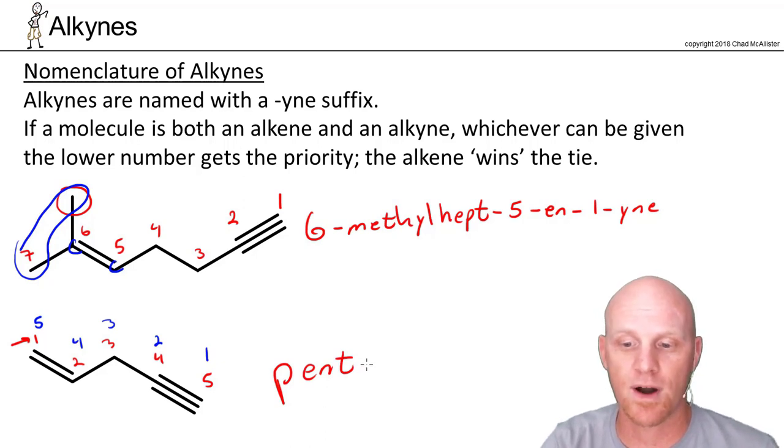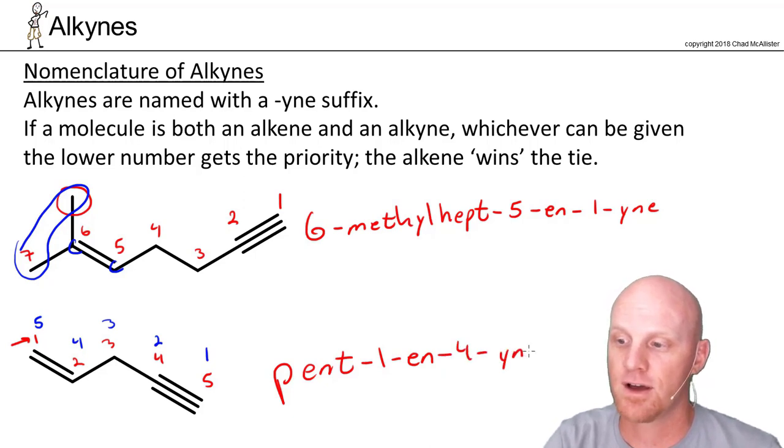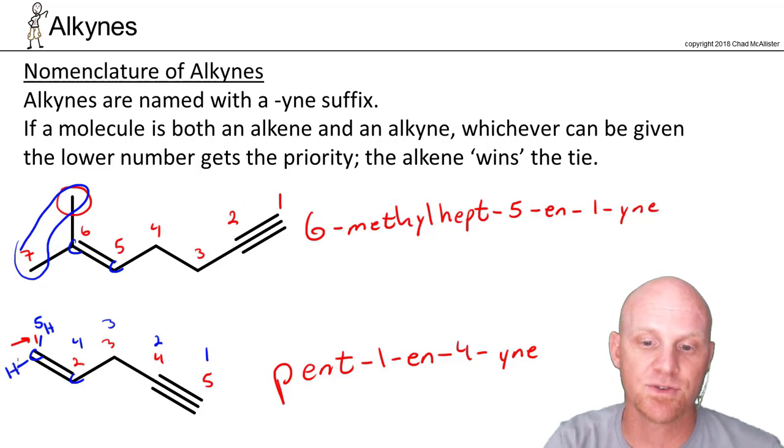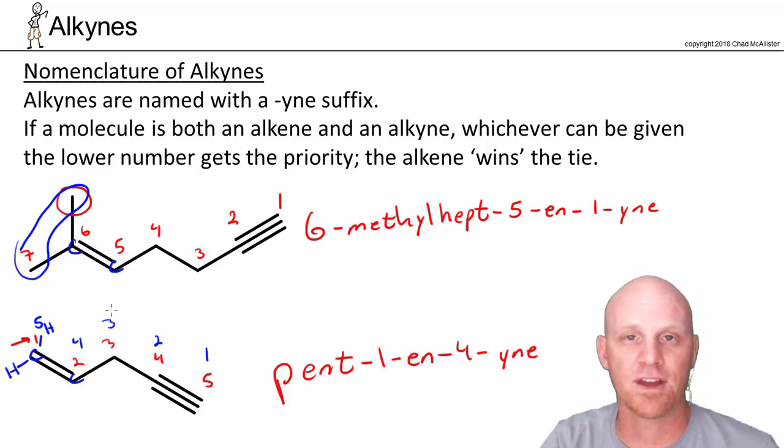Ene before yne in the name. So in this case, pent-1-ene-4-yne. And again, anytime you've got an alkene, you should check to see if E and Z is possible with your sp2 carbons. The sp2 carbon on the left here is bonded to two identical hydrogens, so there's going to be no E and Z or no cis and trans to worry about in this name either.